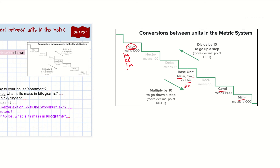Centi means one one-hundredth. So for centi, we might see centigrams, centiliters, or centimeters. If we see that lowercase c or centi, that tells us the units are in centimeters, centiliters, or centigrams. And then milli — you might see milligrams, milliliters, millimeters, or even milliseconds. Milli means one one-thousandth.